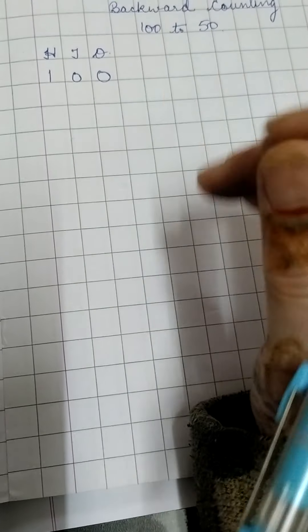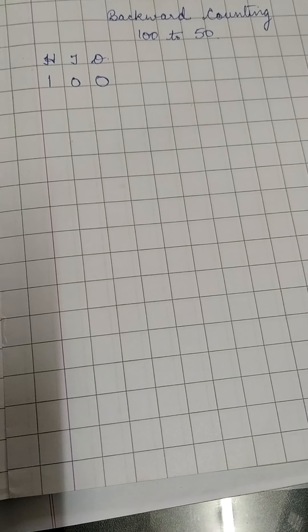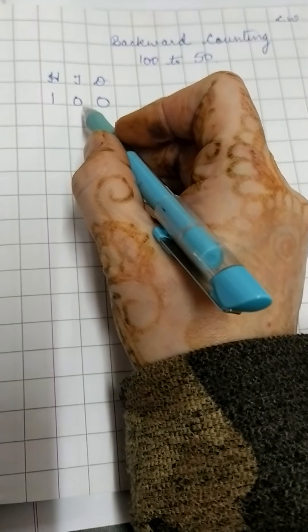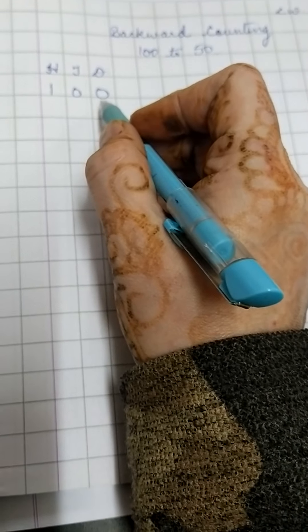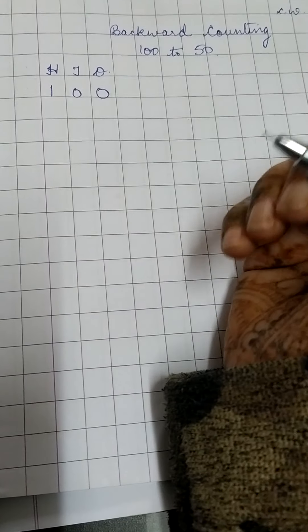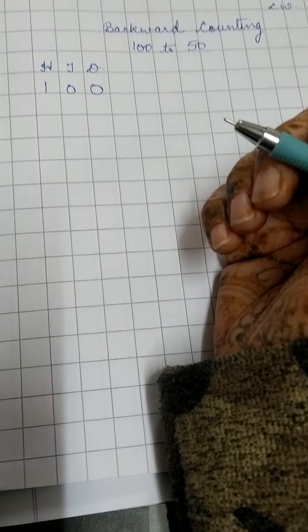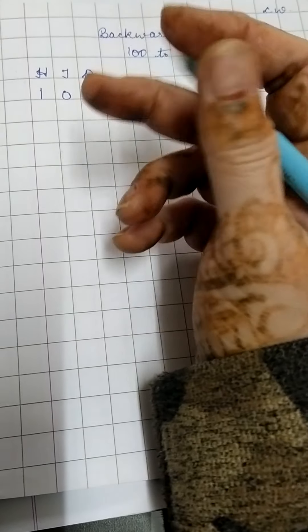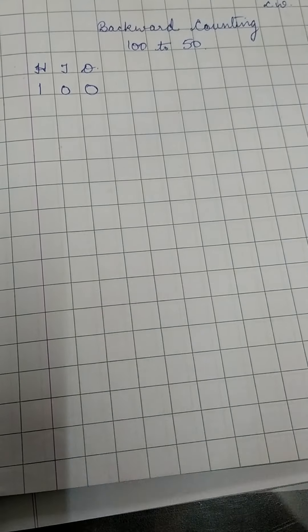So we did increasing order. It was from lower to the upper number, smallest to the biggest number. Now we are doing backward counting. Backward means peechhe jana. So 100 out of 100. Suppose you have 100 candies and you give 1 to your sister or brother. So you are left with 99. You won't say 101. You will say 99. That is backward counting.